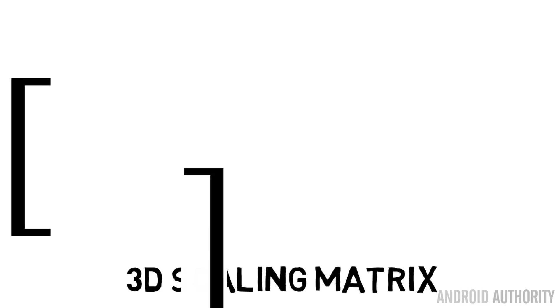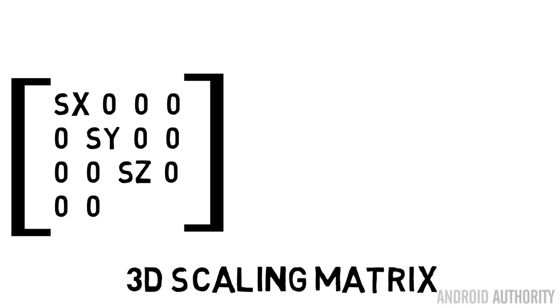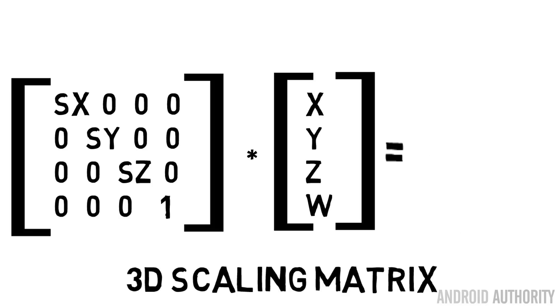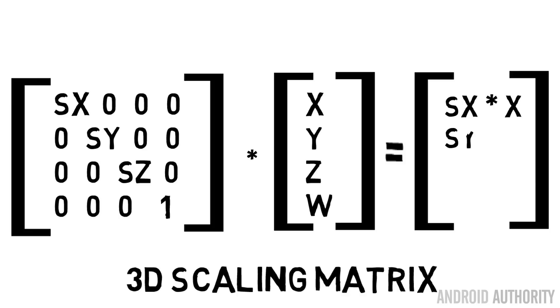In 3D graphics, the best way to express XYZ coordinates is using a vector, and if you want to perform a transformation on a vector you can multiply it by a special 4x4 matrix. These matrices all have different properties — you can do scaling, translation, and rotation using a particular predefined matrix.